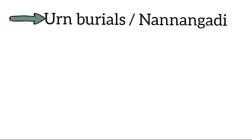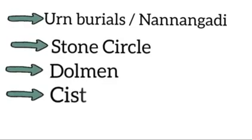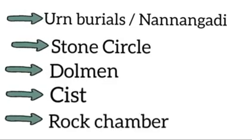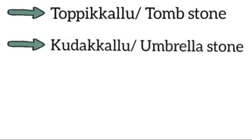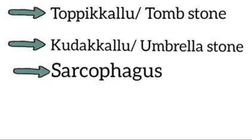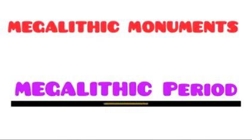Locally available stones were used for this. Stone circle, dolmen, cyst, rock chamber, topikalla or the tombstone, kudakalla or the umbrella stone, sarcophagus, menhir, etc. were remarkable among them. They are known as the megalithic monuments and the period when they were constructed is known as the megalithic period.